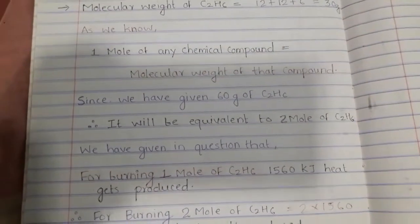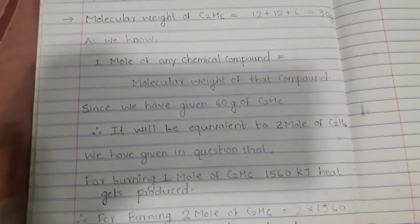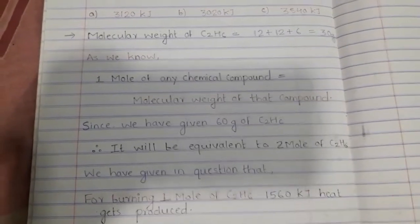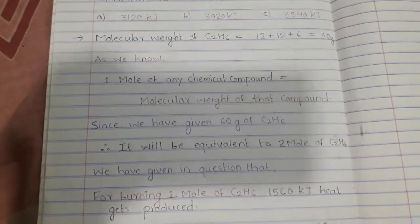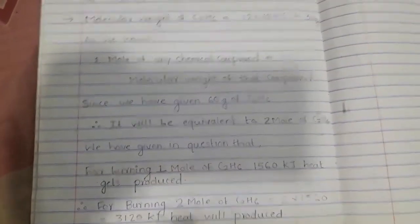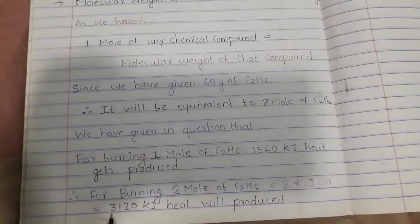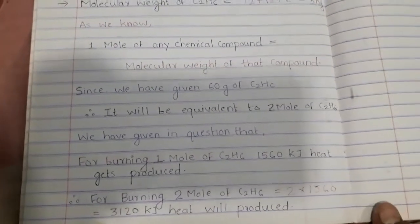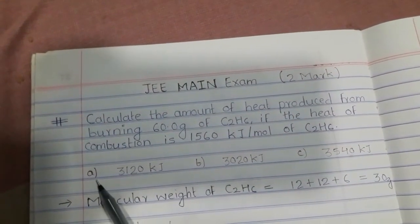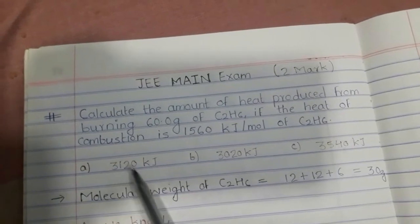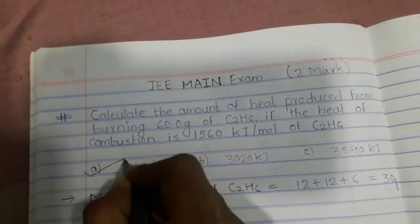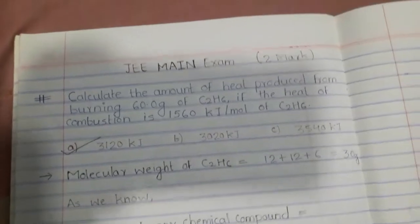This was a very simple question — you just need to know the logic of moles. Simply convert the gram quantity into moles, then multiply to get the correct answer. We have got the answer as 3120 kJ. Looking at the options, you will find 3120 kJ as the first option, which is option A. So the perfect answer for this question is option A: 3120 kJ.